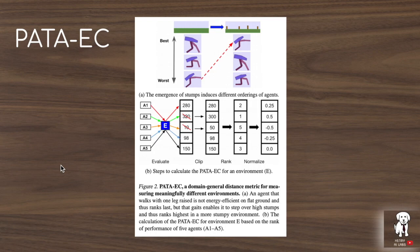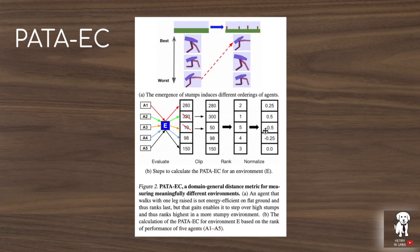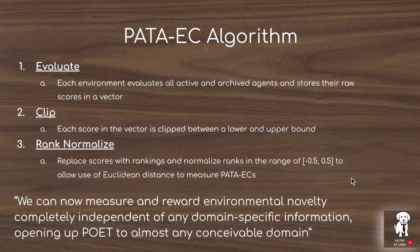The idea behind the PATAEC extension is that novel environments are those that provide new information about how the behaviors of agents within them differ — novel challenges should make novel distinctions among agents in the system. As a new environment is evolved in this simultaneous co-evolution of the CPPN-encoded environment parameters and the theta parameters of the walking agents, we evaluate the performance of each agent, see if the new rank order changes, and determine if the new environment deserves to be added to the population. More specifically, the pseudocode is: evaluate all agents in the new environment, store their scores in a raw vector, clip scores between a lower and upper bound, and normalize the rankings to use Euclidean distance to compare ranking vectors between environments.